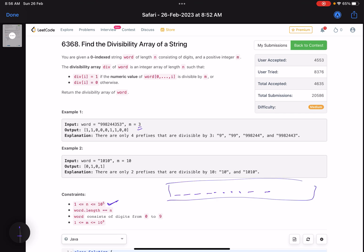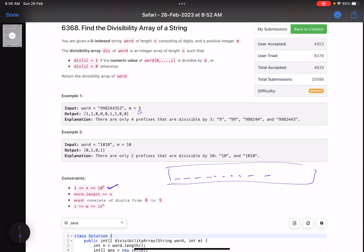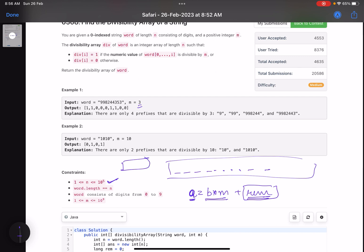What is the trick here? Suppose I write something like this: a equals b into m plus remainder. This means that I have a number which is represented like this: b times m plus remainder. In short, if for a particular position, for a particular prefix, my remainder is 0, that means that number is divisible by the given m. Here m is the given m.